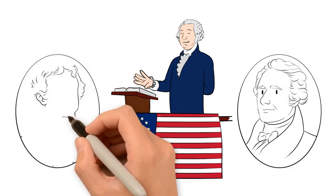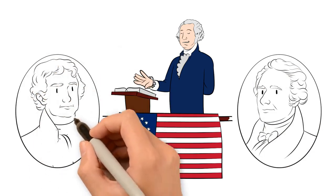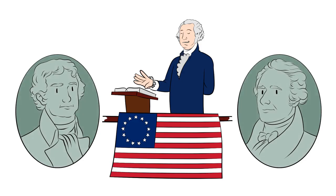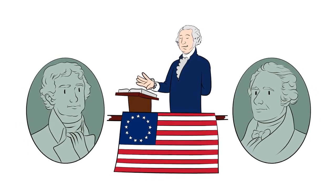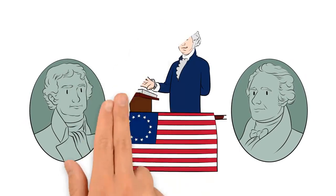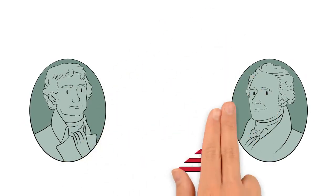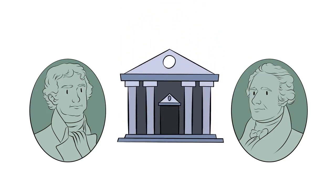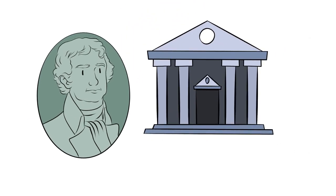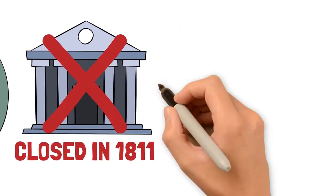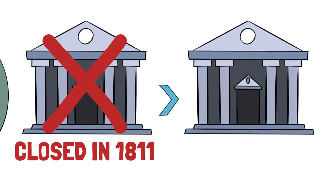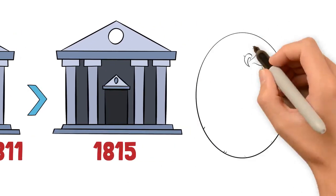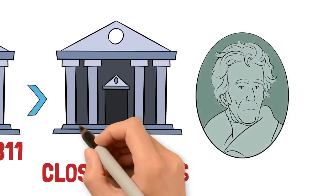They were opposed by Jeffersonian Republicans, who understood a central bank to be a dangerous institution of corruption that would benefit a politically connected minority. Both sides saw their share of victories and defeats, leading to the establishment of the first Bank of the United States under Washington, ended by Jeffersonians in 1811. A second Bank of the United States was created in 1815 and then ended by Andrew Jackson in 1836.